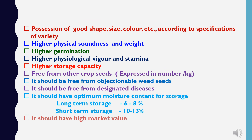Other characteristics of seed quality include possession of good shape, size, color, etc. according to the specification of variety; higher physical soundness and weight; higher germination; higher physiological vigor and stamina; higher storage capacity; free from other crop seeds (expressed in number per kg); free from objectionable weed seeds; free from designated noxious weeds; optimum moisture content for storage — for long-term storage moisture should be 6–8%, for short-term storage 10–13%; and high market value.